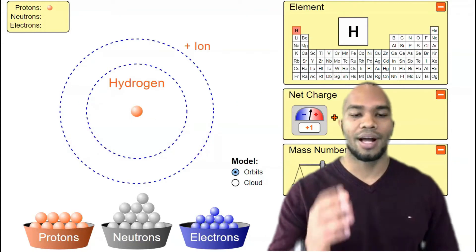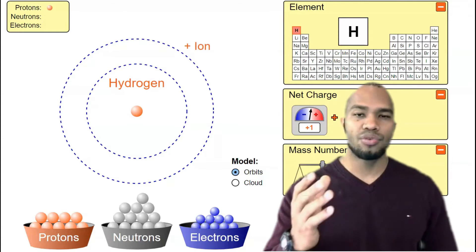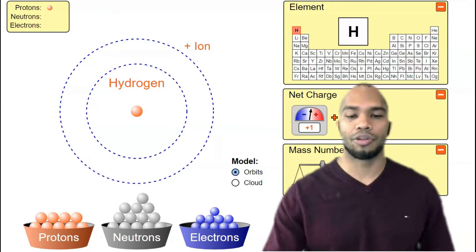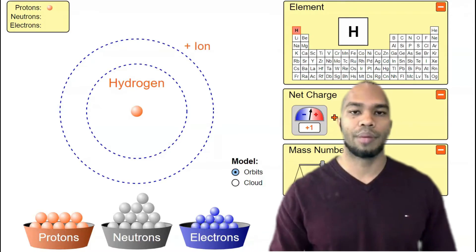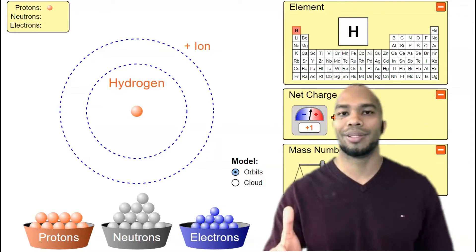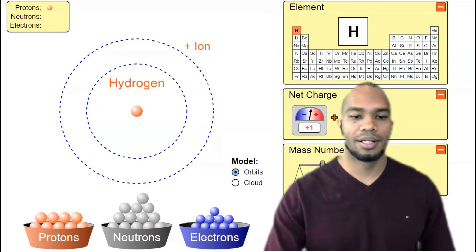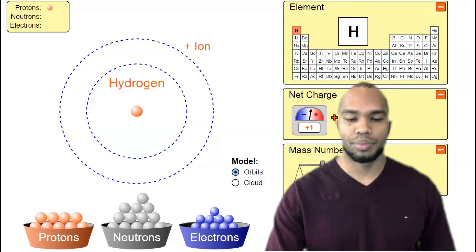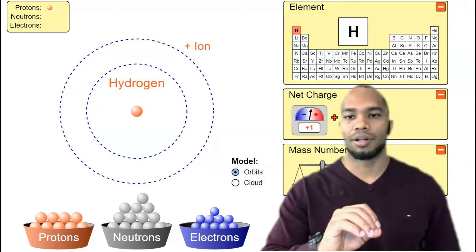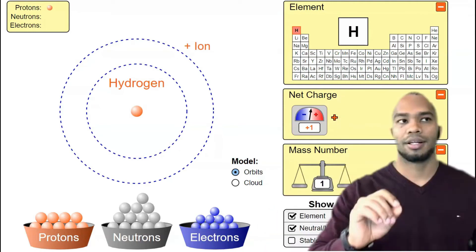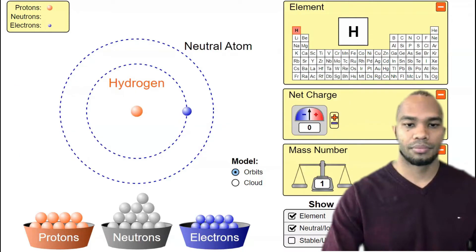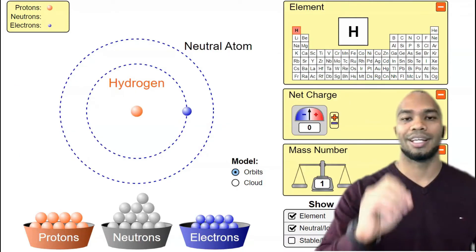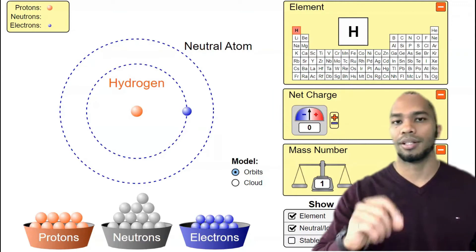We now have an atom of hydrogen. Hydrogen is the first element on the periodic table because it has one proton. Remember, protons determine the identity of the atom. Next, we're going to get our electron, because all the elements on the periodic table have equal numbers of protons and electrons. So if hydrogen has one proton, it must have one electron.